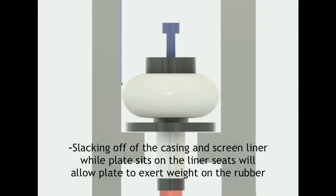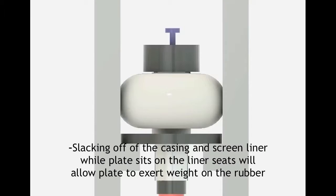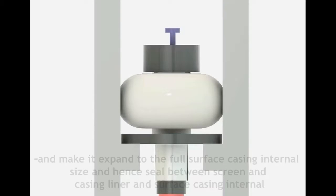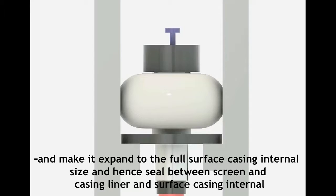Slacking off of the casing and screen liner while plate sits on the liner seats will allow plate to exert weight on the rubber and make it expand to the full surface casing internal size and hence seal between screen and casing liner and surface casing internal.